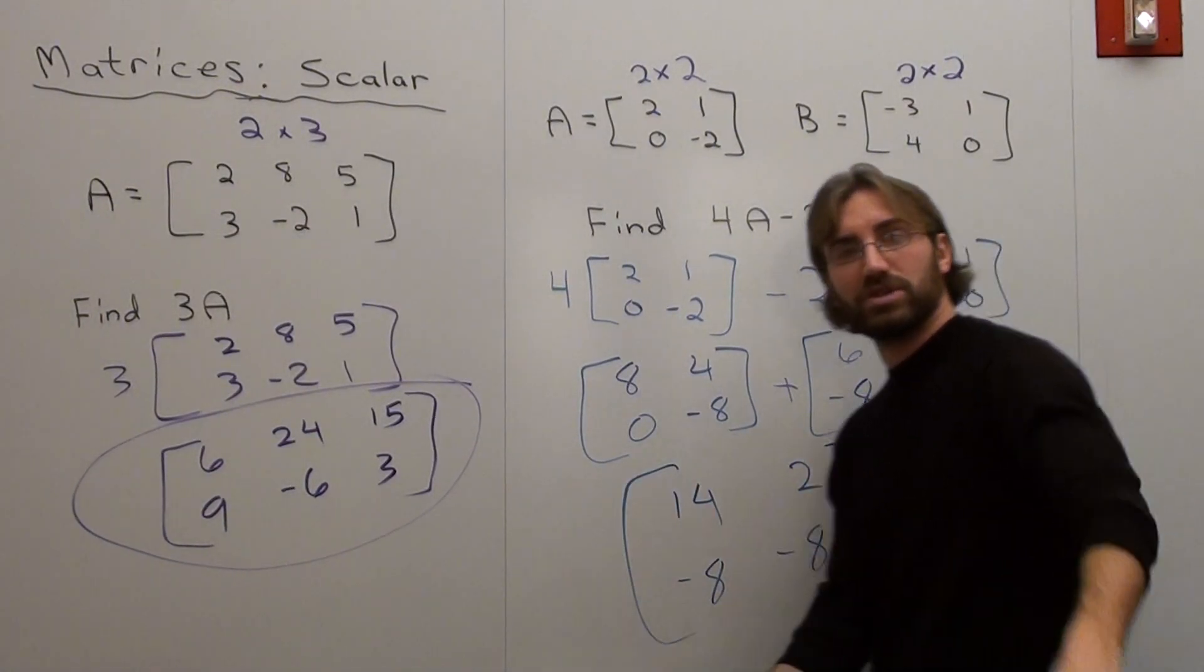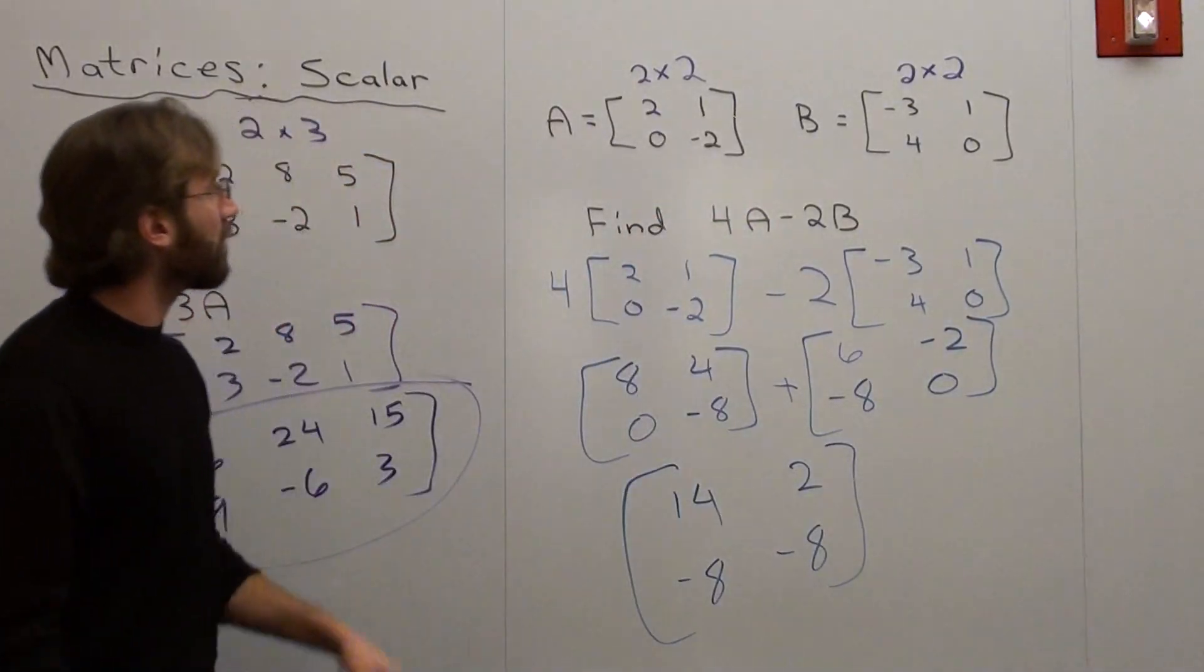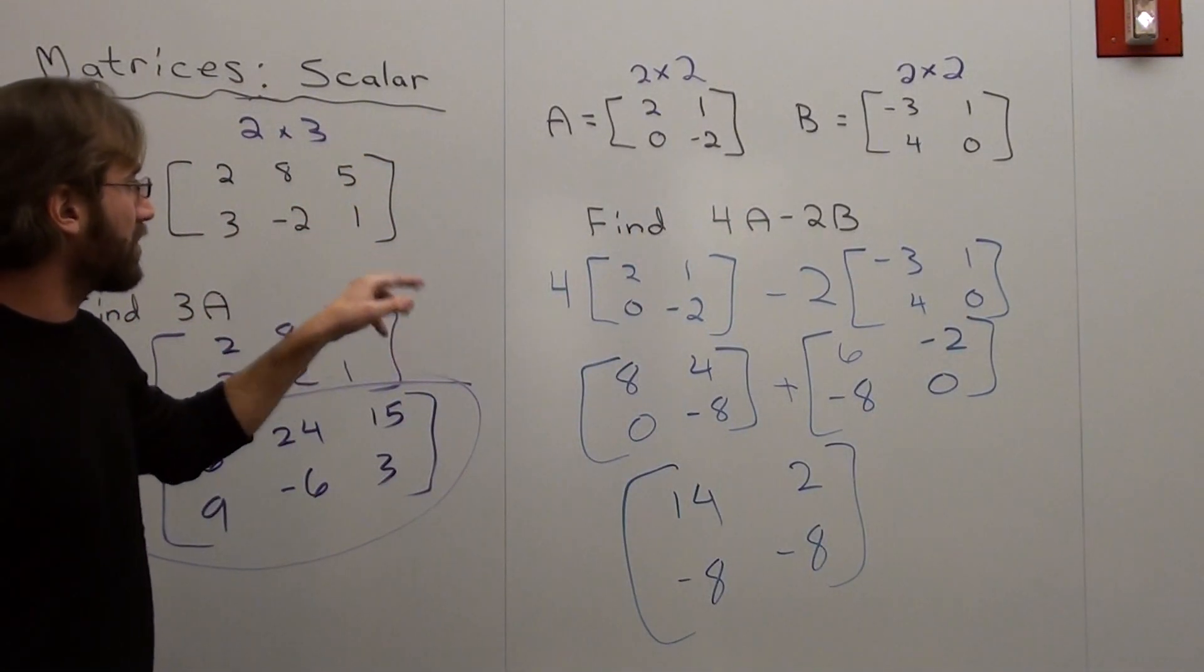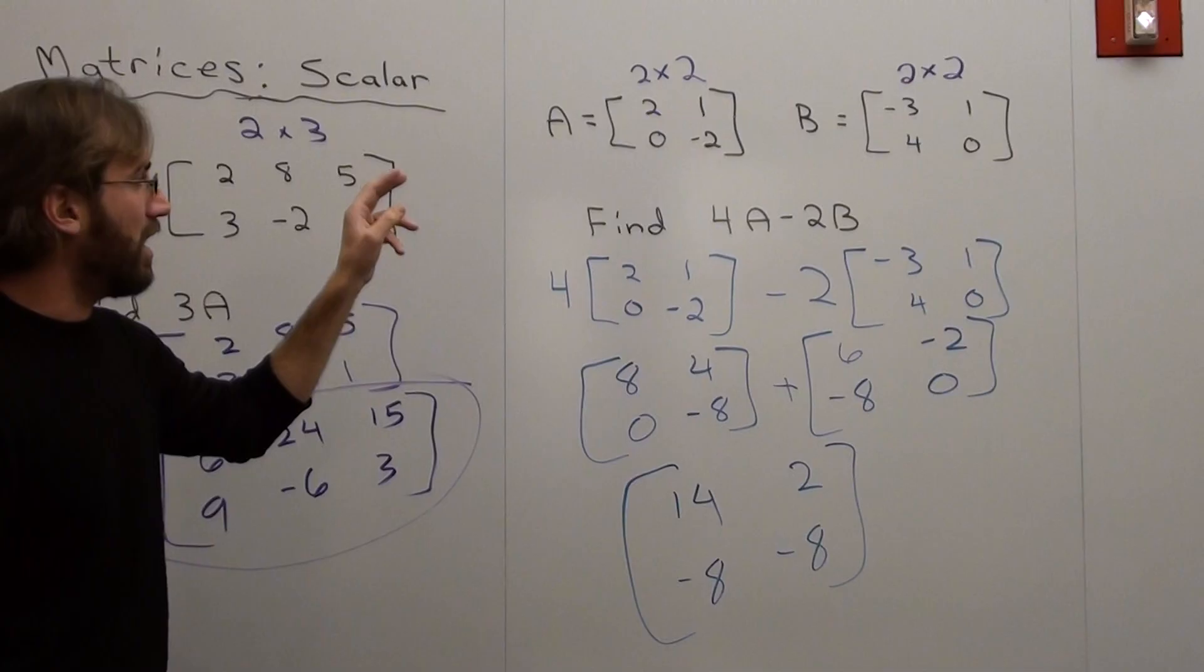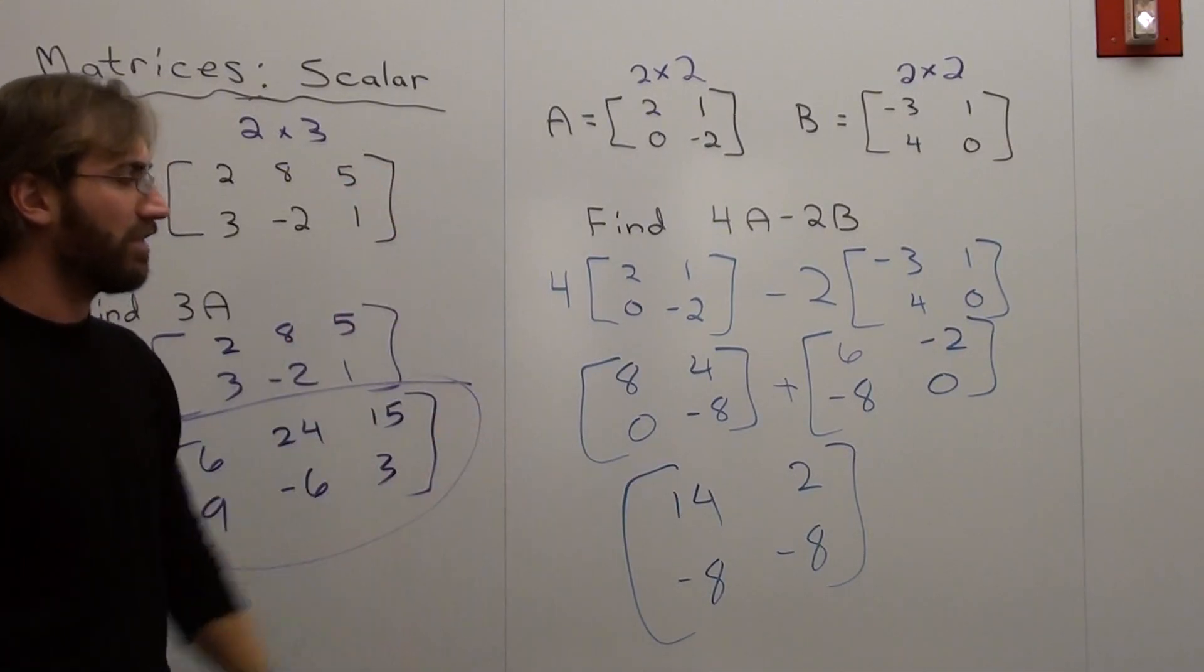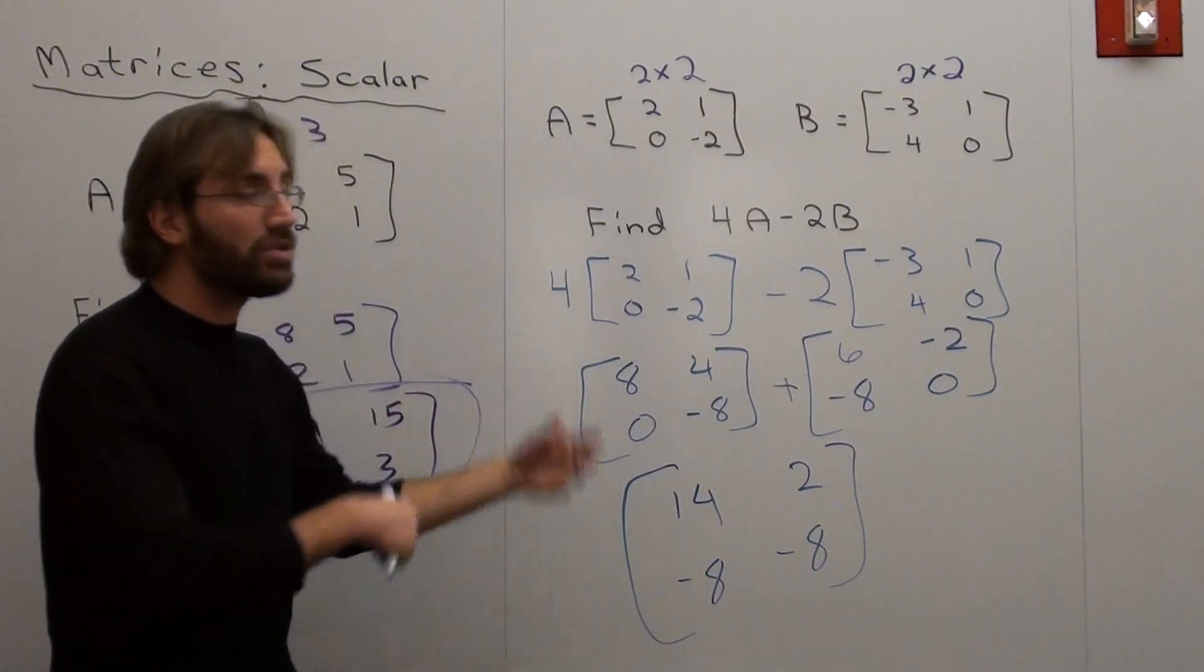That's a 2 by 3 matrix, so that looks right. Let me just double check that really quickly. That should be 8, 4, 0, negative 8. Bam. 6, negative 2, negative 8, 0. Everything else works out. So that's how you do scalar.